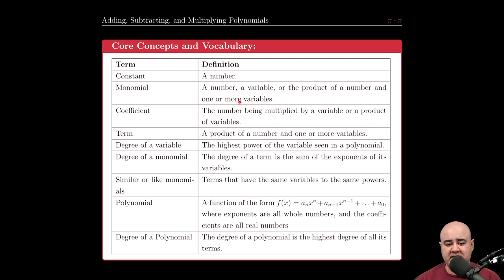So for instance, three is a monomial because it's just a number. X is a monomial because it's just a variable. 3X is a monomial because it's a product of a number and one or more variables. 3XY is also a monomial for the same reason.